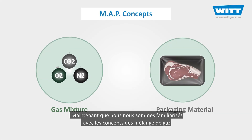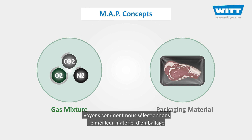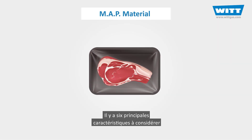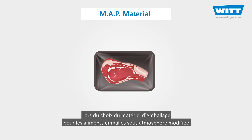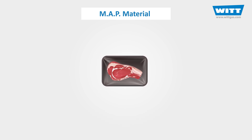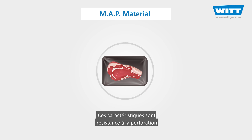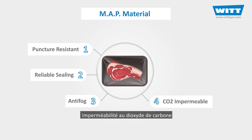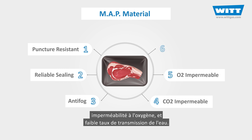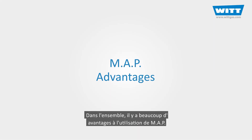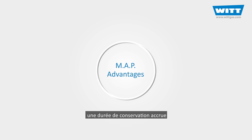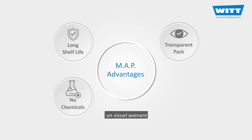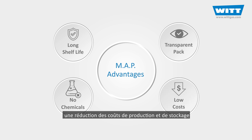Now that we've got familiar with the gas mixture concepts, let's see how we select the best packaging material, as it's essential to maintain the quality and safety of MAP foods. There are six main characteristics to consider when selecting packaging material for modified atmosphere packed foods: resistance to puncture, sealing reliability, anti-fogging properties, carbon dioxide impermeability, oxygen impermeability, and low water transmission rate. All in all, there are lots of benefits of using MAP — increased shelf life, little or no need for chemical preservatives, improved presentation, clear view, and reduction in production and storage costs.